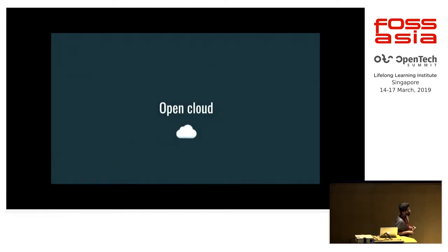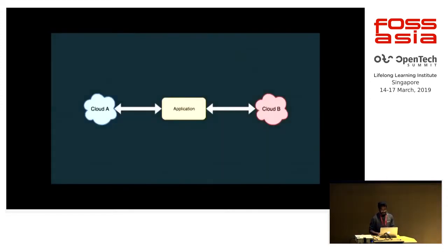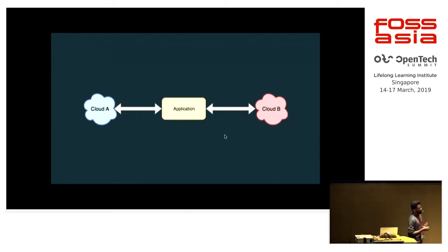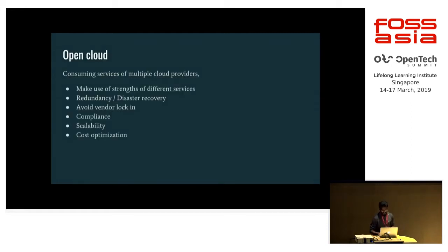Before diving into all the details of NodeCloud and how we manage the APIs, I need to go through what open cloud is all about. Imagine we have an application that needs to use different services from different clouds — cloud A and cloud B. The basic definition of open cloud would be consuming different services of different cloud providers.